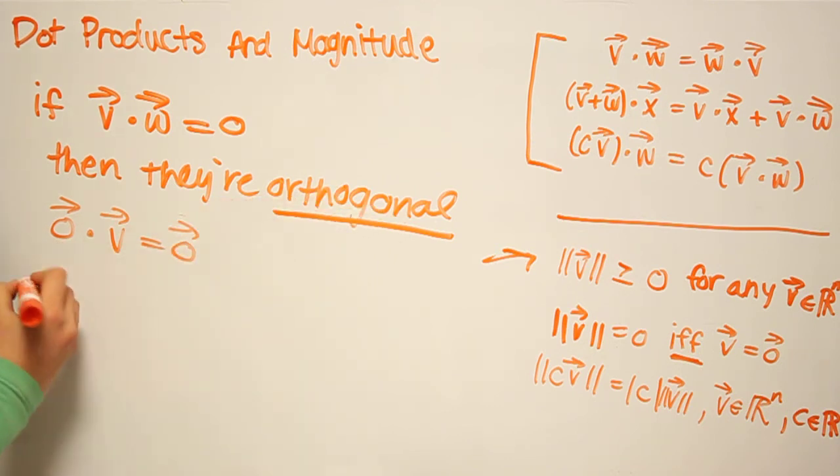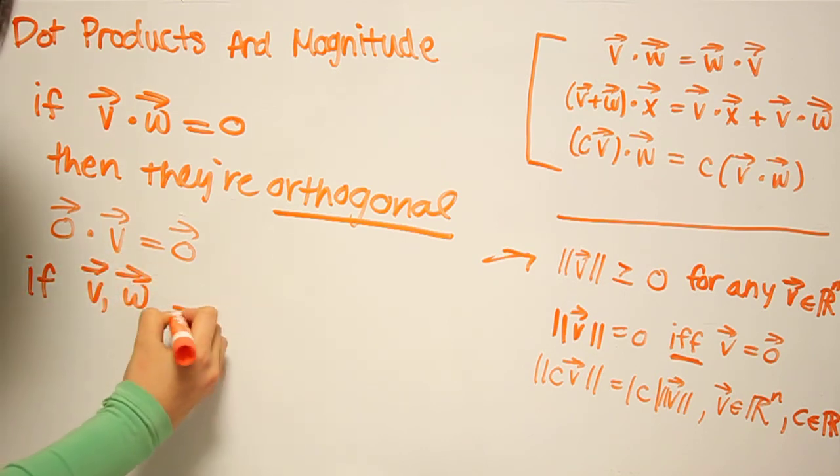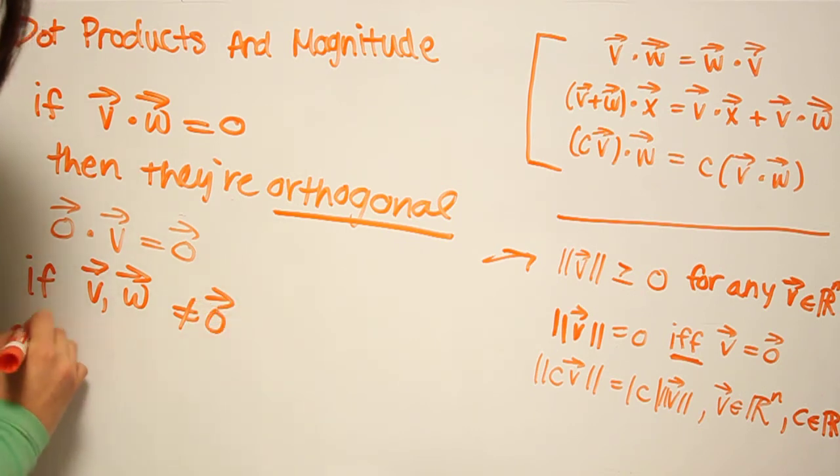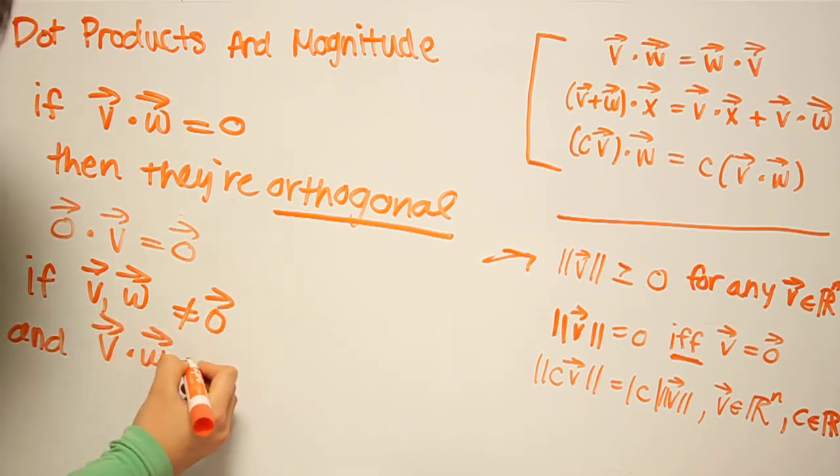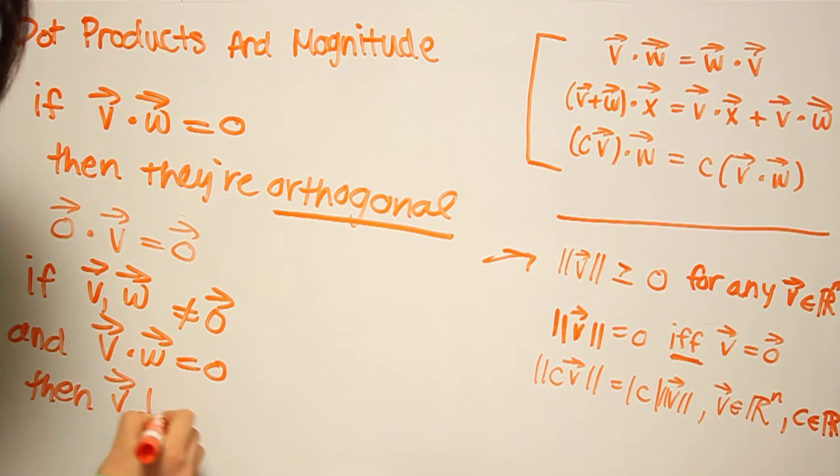we say that this special case is also orthogonal. But if V and W are not equal to the zero vector, and V dotted with W is equal to 0, then they are perpendicular. And so if you were to graph them, if they were in R2 or R3, then you would see that they form a 90 degree angle.